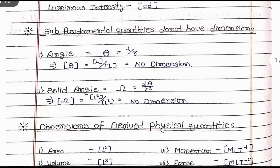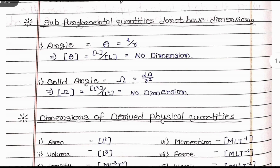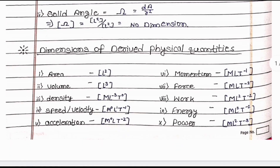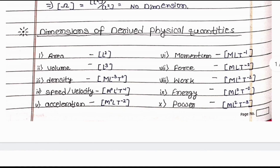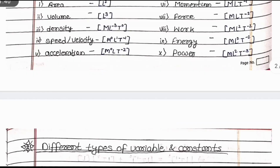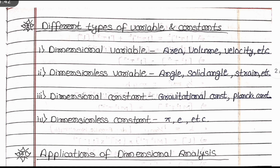Angle and solid angle do not have their dimension. Angle is represented by theta and solid angle is represented by pi — they do not have their dimension. Dimensions of derived physical quantities are those which are derived from the main physical quantity. Some examples are area, volume, density, speed, and acceleration.